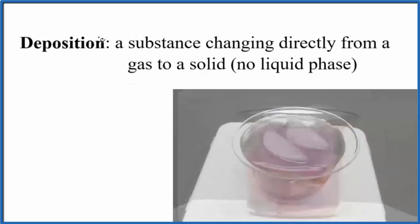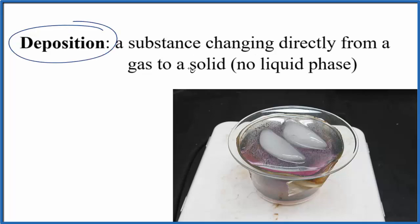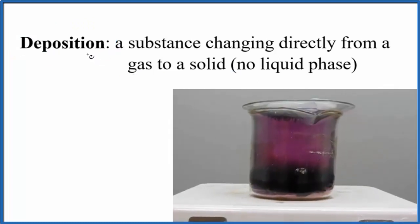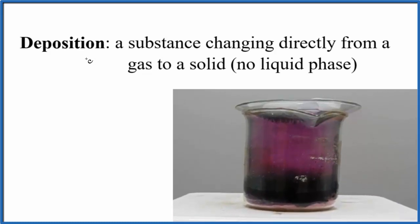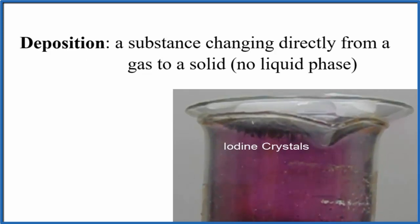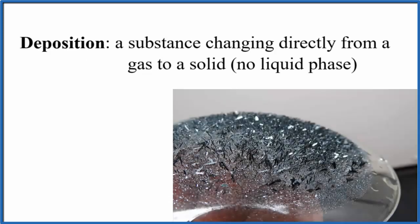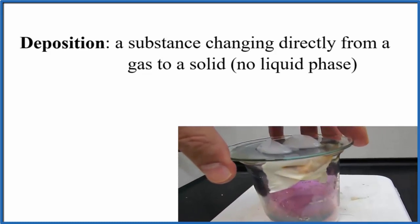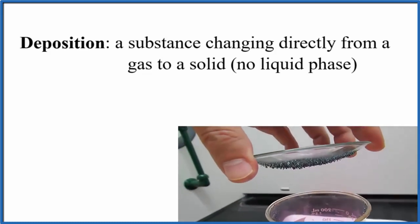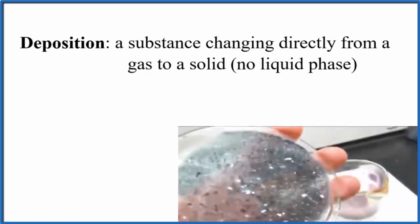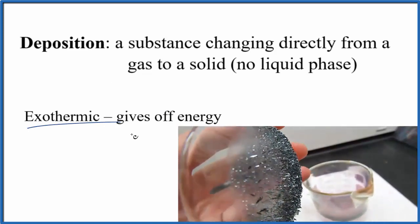The reverse of sublimation is called deposition — that's where a substance changes directly from the gas back to the solid, with no liquid phase. Since it's the opposite of sublimation, deposition is exothermic — it gives off heat. You can see the watch glass there, where crystals of iodine have formed from the gas, changing directly to those solid crystals. When they did, they actually gave off heat. That glass got a little bit warmer as those iodine crystals formed. So deposition is exothermic because it gives off energy.